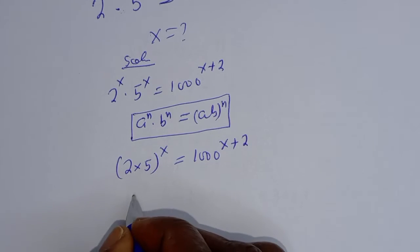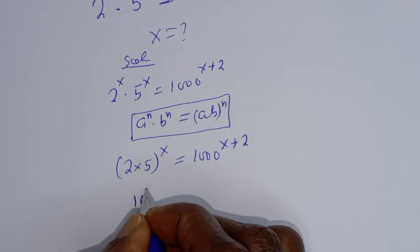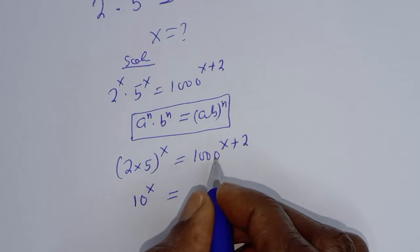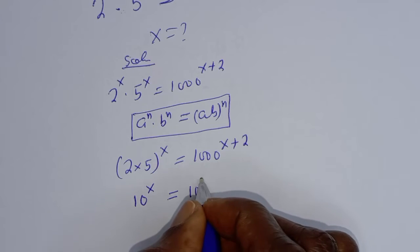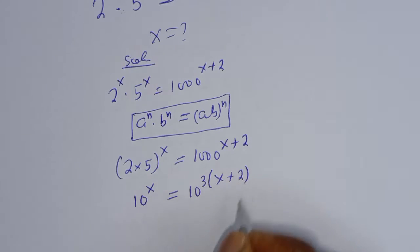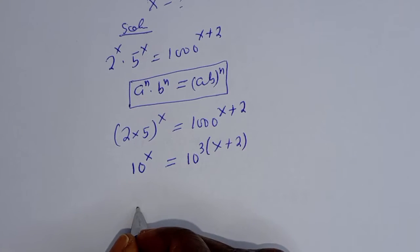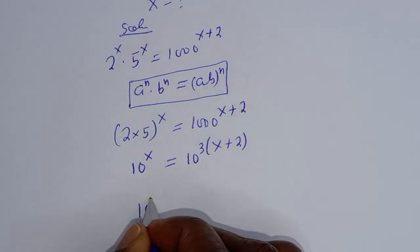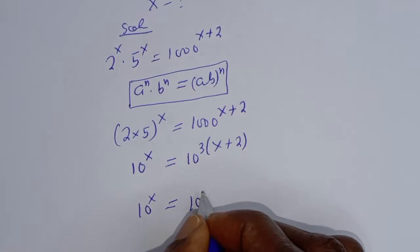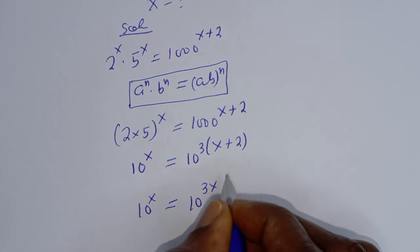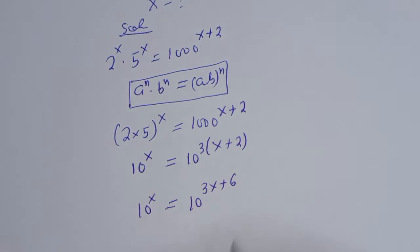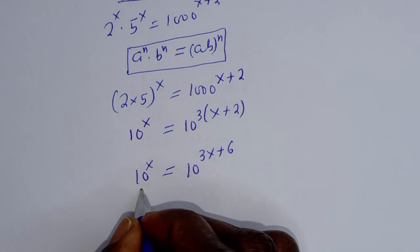2 times 5 is 10, so this is 10 raised to power s is equal to 1000, which can be written as 10 raised to power 3, bracket s plus 2. This is 10 raised to power s is equal to 10 raised to power 3s plus 6. They have the same base.